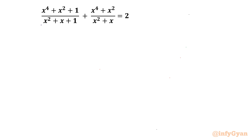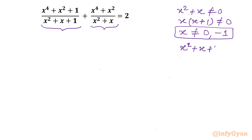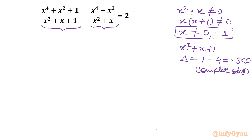Let's get started by writing the domain of the equation. These two denominators cannot be zero. So x² + x cannot be 0 — taking x common, x(x + 1) ≠ 0, which means x cannot be 0 and x cannot be −1. For x² + x + 1, checking the discriminant gives 1 − 4 = −3, which is negative, so it has only complex roots — no real restrictions needed from that factor.